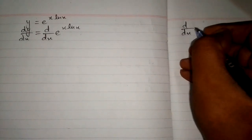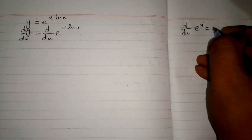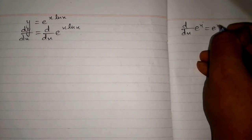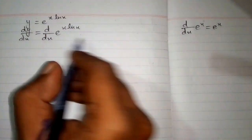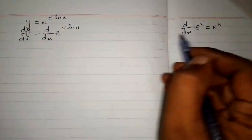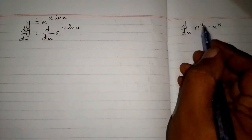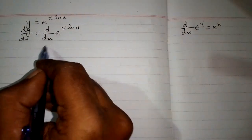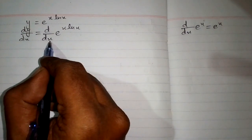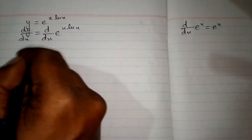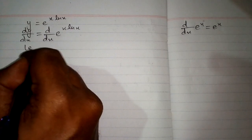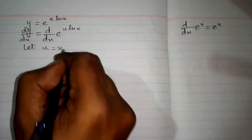Now, we know that the derivative of e to the power x is equal to e to the power x. We can apply this formula over here, but this variable and this variable must be the same. We can see that we have x over here, but we have x times ln x in the exponent. So let u equal x times ln of x.